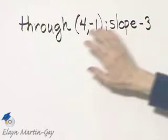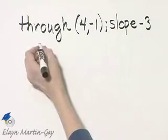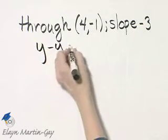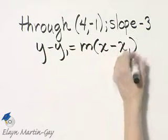So since we're given the slope and a point, we'll use the point-slope form. Remember that form? It's y minus y sub 1 equals slope times x minus x sub 1.